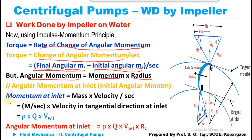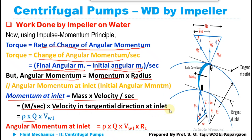The momentum at the inlet is given by mass per second multiplied by velocity in the tangential direction. Mass per second is ρQ, and the tangential velocity at the inlet is Vw1. Since Vw1 equals 0 (radial entry assumption), the entire angular momentum at the inlet becomes 0.